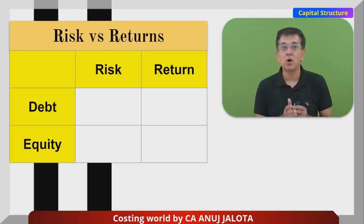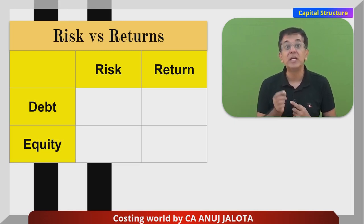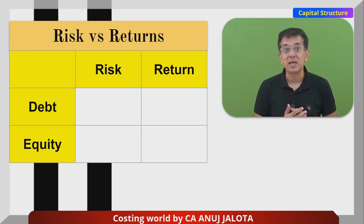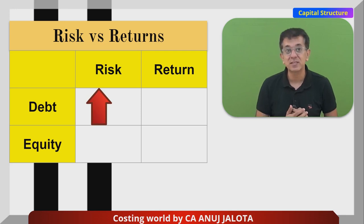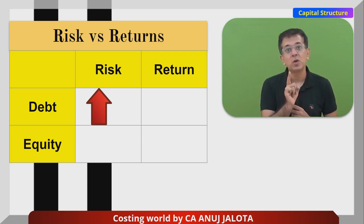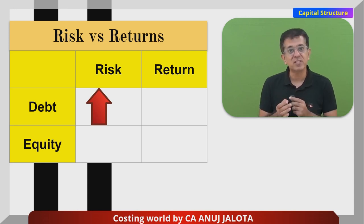If I talk of risk and returns — if there is a company that is about to issue debentures or debt, do remember the risk is high. Why is the risk high? Whether or not the company has profit, it will still have to pay the cost of debt, which means interest. There is a fixed commitment to pay, and whenever there is a fixed commitment, risk increases.